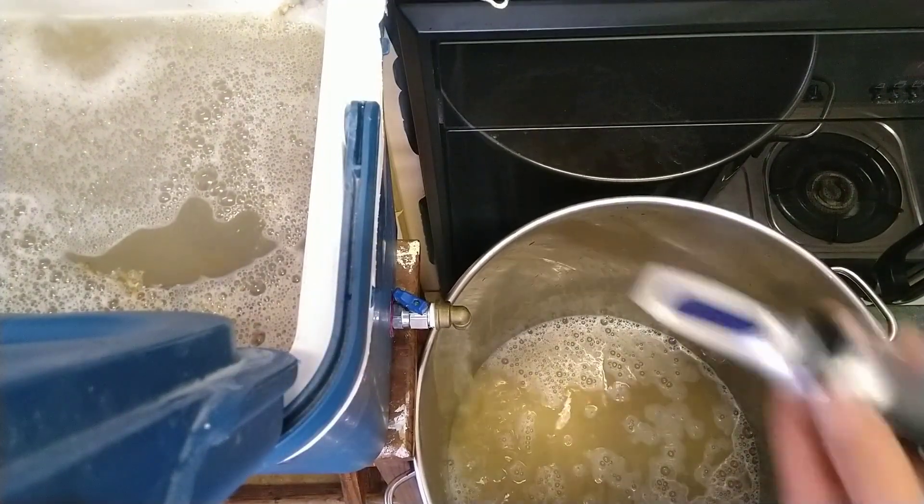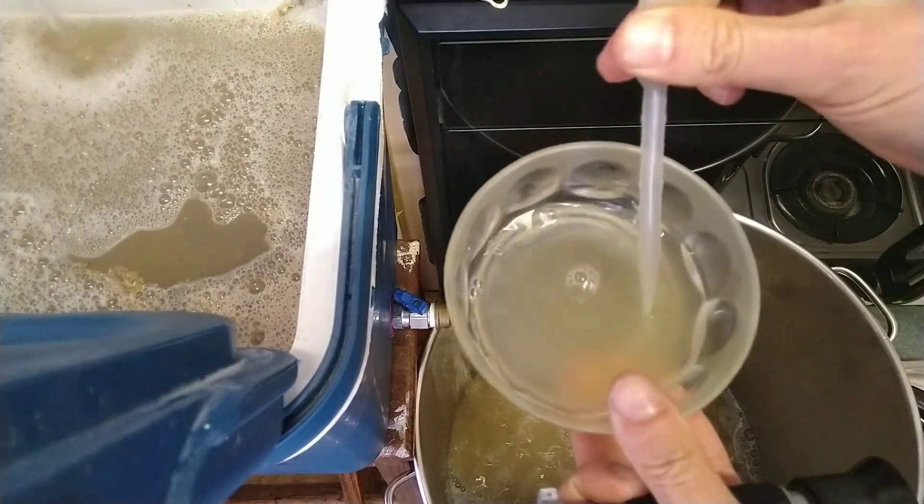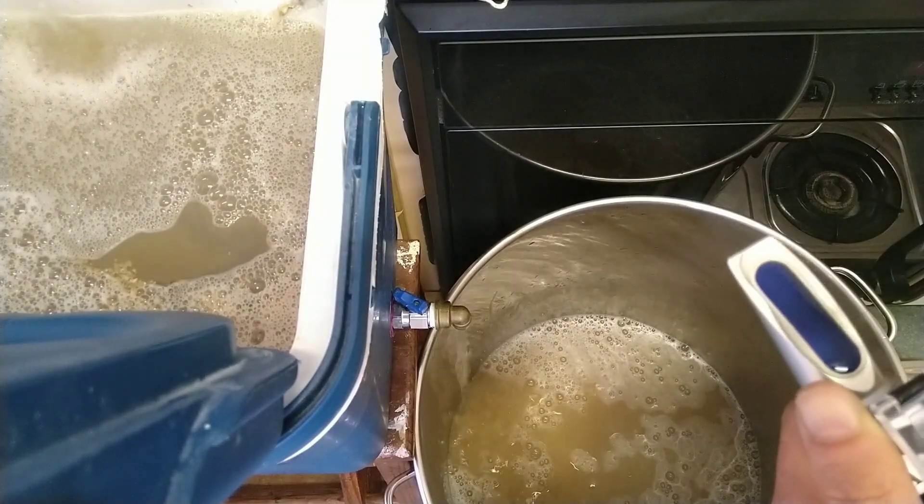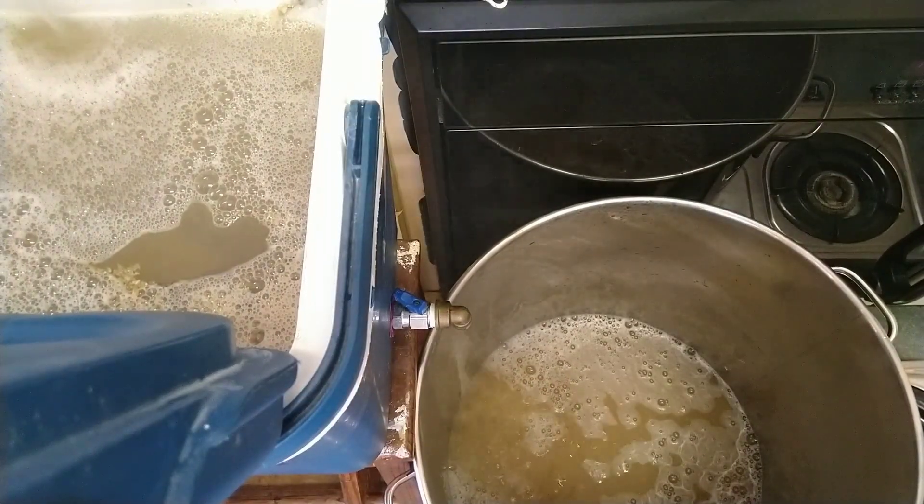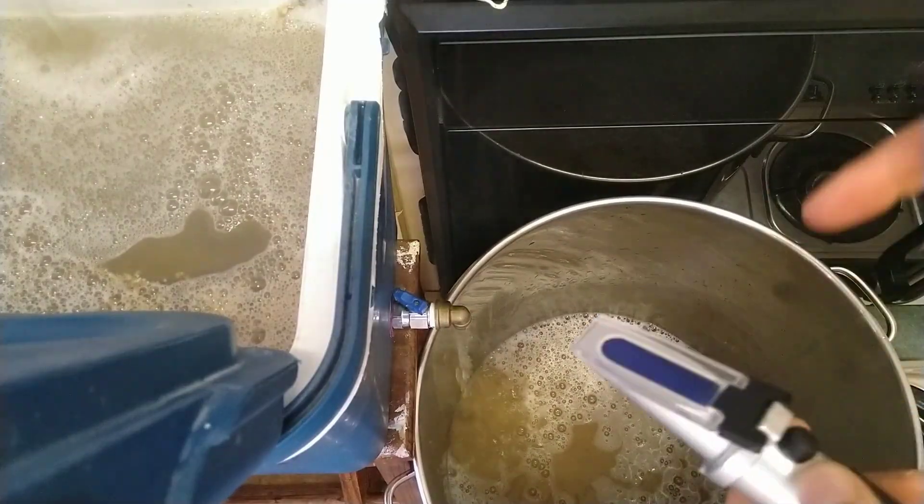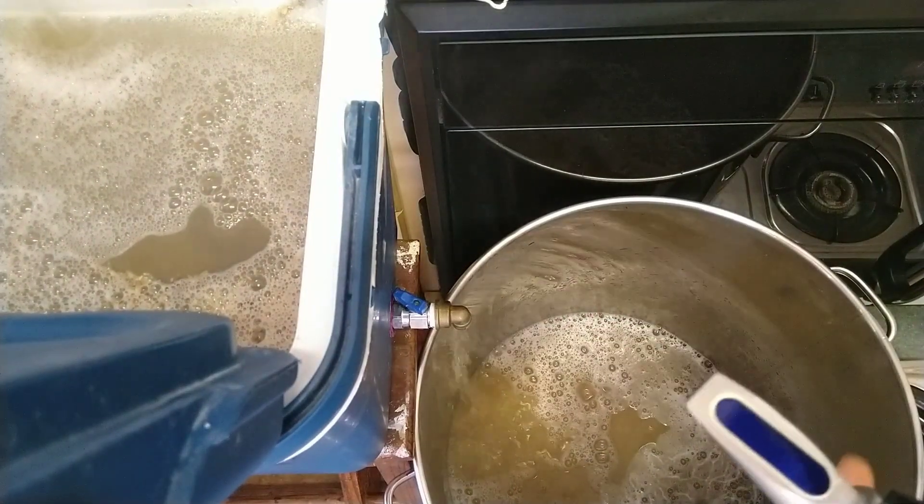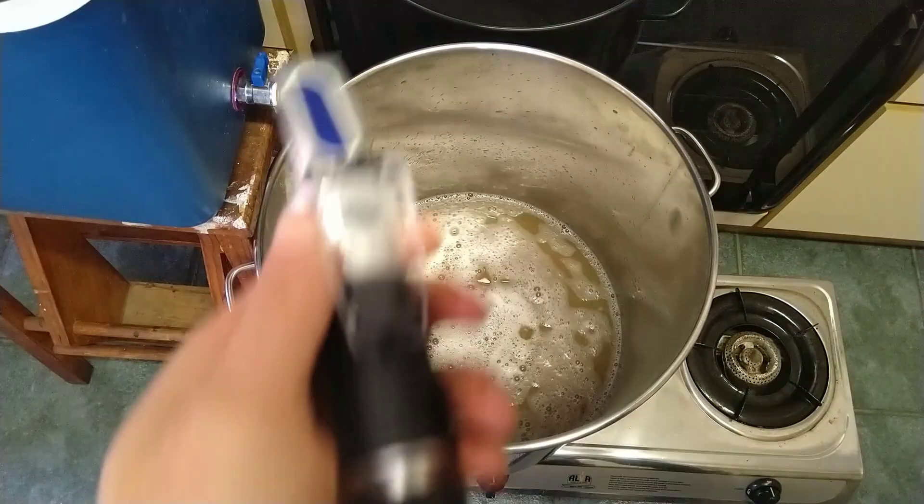You can use something like this refractometer. Take a little sample, suck it up, and cover this entirely while avoiding air bubbles. When you look at a strong light source through the eyepiece, it'll tell you what the gravity is. Currently about 1.044. I'll clean this off with water, and as we add more water it'll start getting lower in sugar.